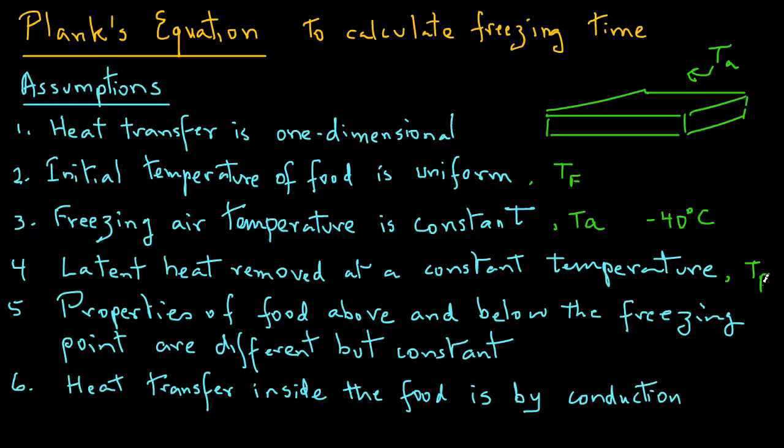Now we will look at the implications of these preceding assumptions. Because the outer surface of the food is cooled by air, the mode of heat transfer at the surface is due to convection. The two modes — conduction and convection — define the heat transfer mechanism inside and outside of the food. The cold air is at a constant temperature Ta, typically around minus 40 degrees C. So the difference between the temperature of the product and the surrounding air temperature is what provides the required temperature gradient that promotes heat transfer from the solid food into the air.